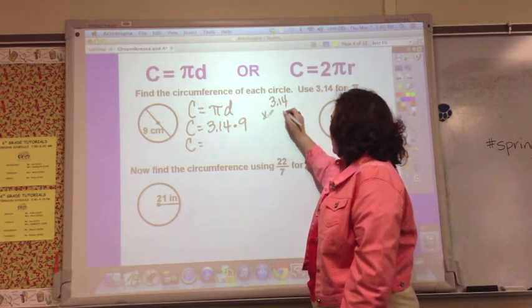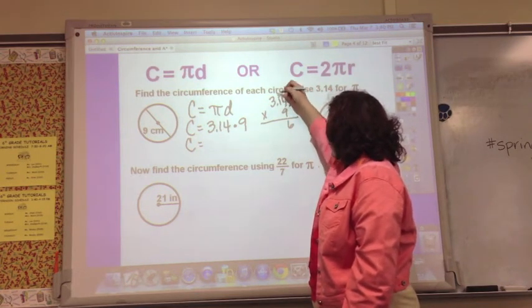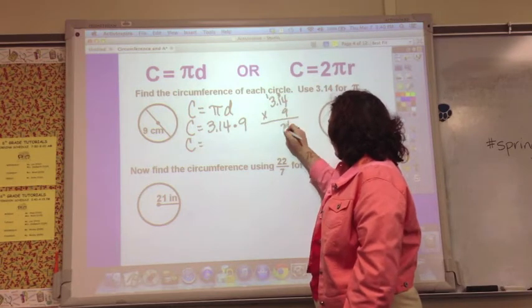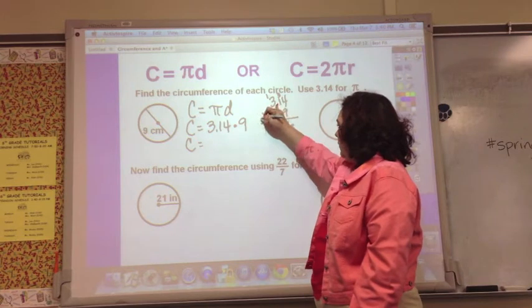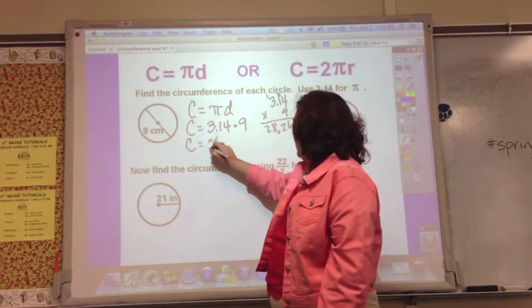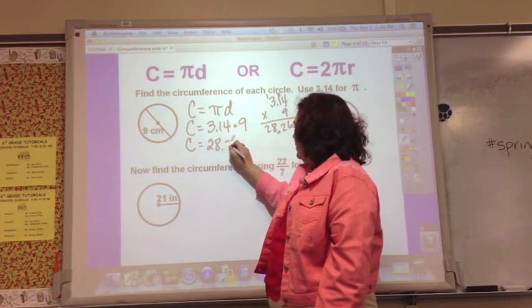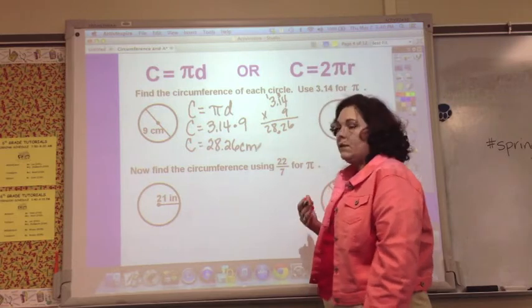Times 9, I get 36 and 9 plus 3 is 12, and 27, 28, and 2 places over for the decimal point.